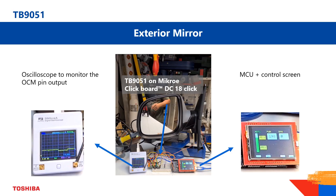Additionally, we have monitored the OCM output of the TB9051 with a small oscilloscope to make the motor coil current waveform directly visible to you.